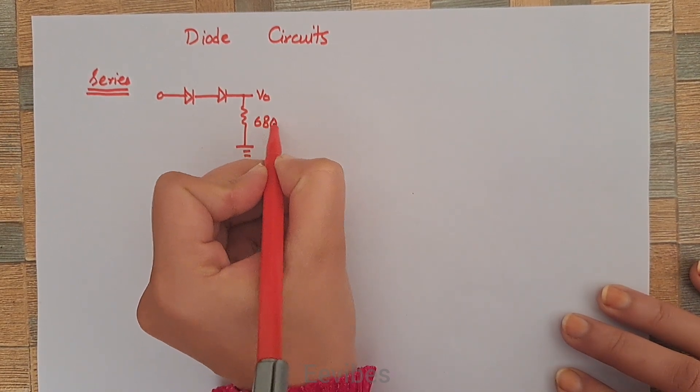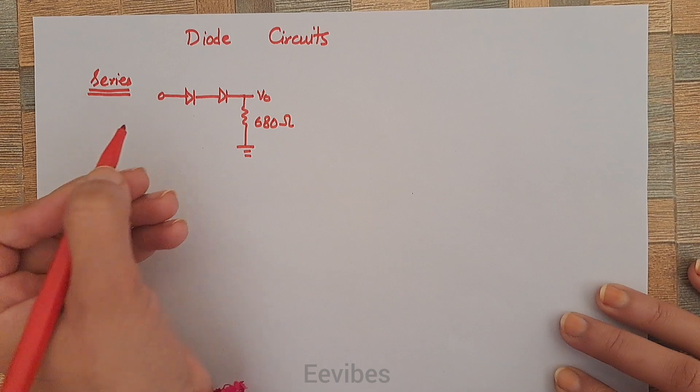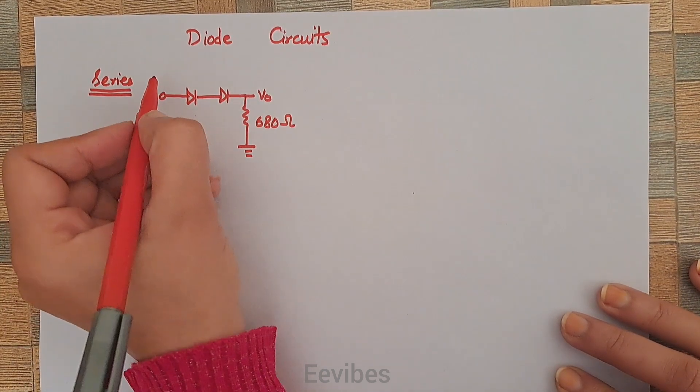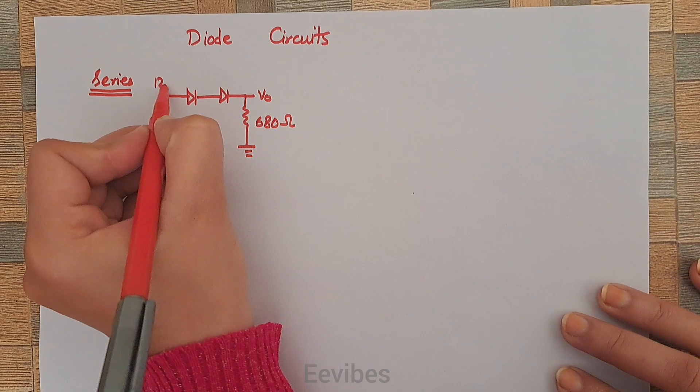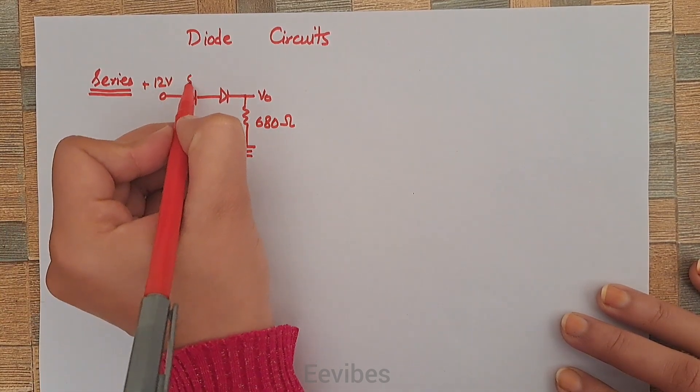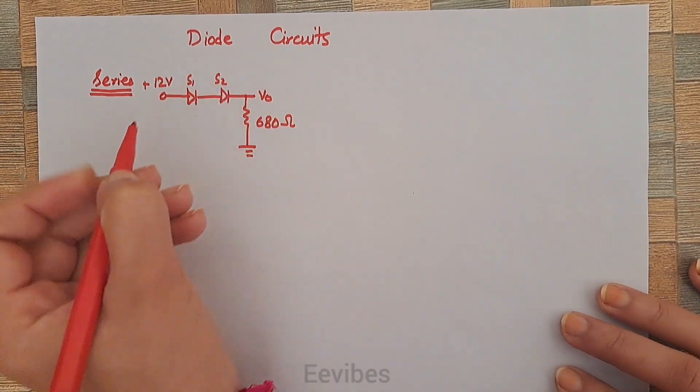Assuming that the value of this resistor is equal to 680 ohms, this is basically the current limiting resistor present in the circuitry. Here the input voltage is +12 volts. Let's call this silicon 1 diode and silicon 2 diode.